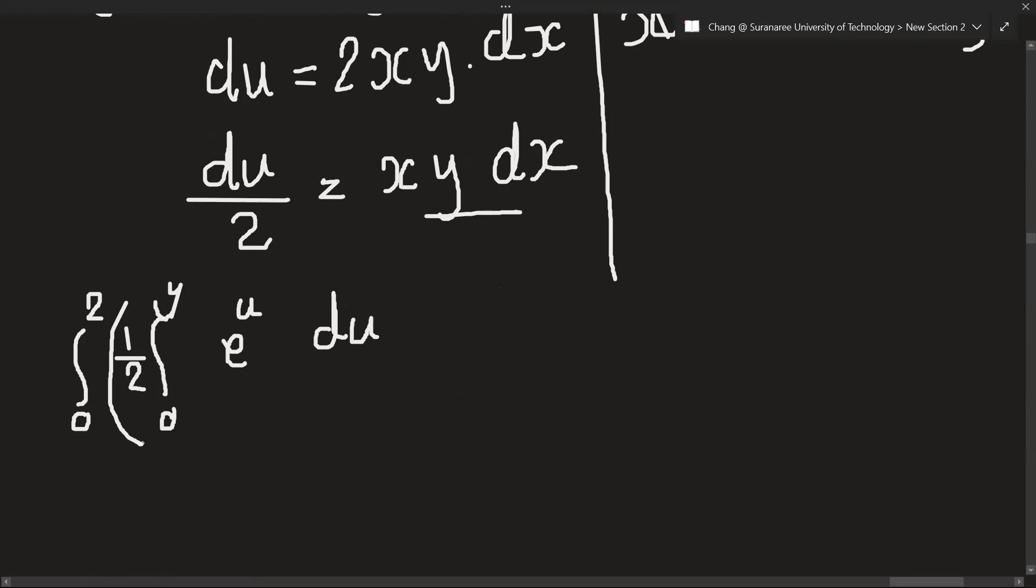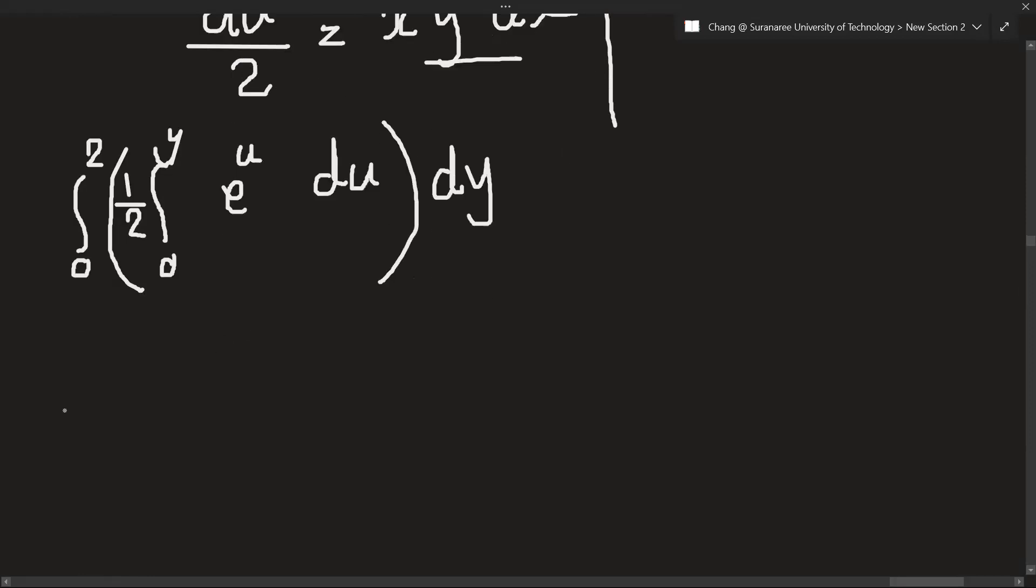And we will integrate that all with dy. So let's solve that: one over two, I will take this out in front. The interval is 0 to 2. When we integrate e^u, we will get e^u, and the interval of u is 0 to y, dy.